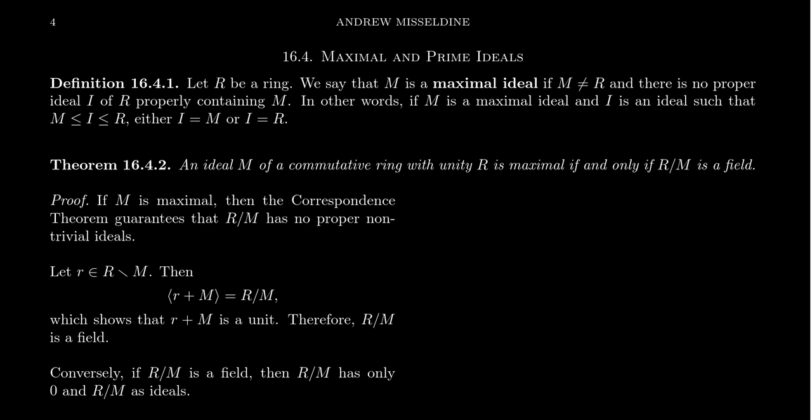So that direction is essentially just the correspondence theorem. Since you kill off a maximal ideal, there's no ideals left. And so every principal ideal is the whole ring, you then get every element's a unit.